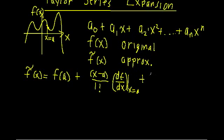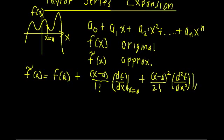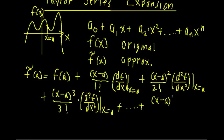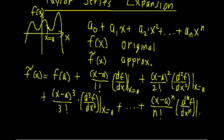The next term is x minus a squared over two factorial times the second derivative of f with respect to x, evaluated at x equals a. Then x minus a cubed divided by three factorial times the third derivative of f with respect to x, evaluated at x equals a. We add as many orders as needed — up to x minus a to the n, divided by n factorial times the nth derivative of f with respect to x, evaluated at x equals a.